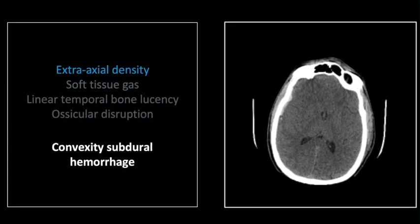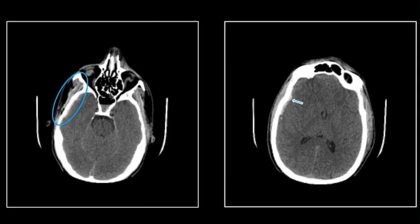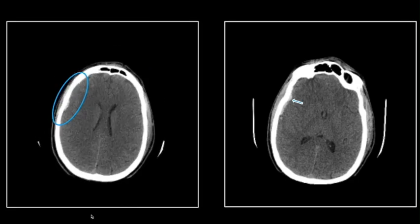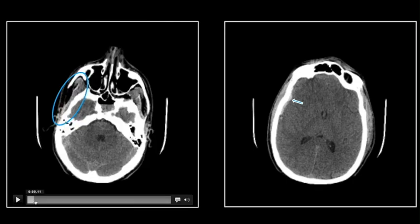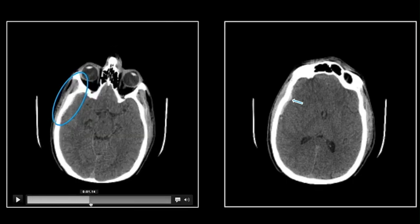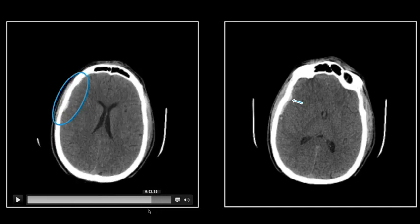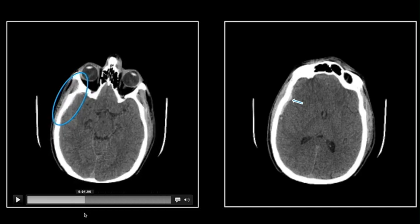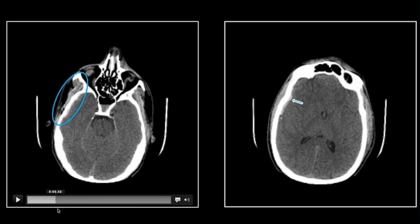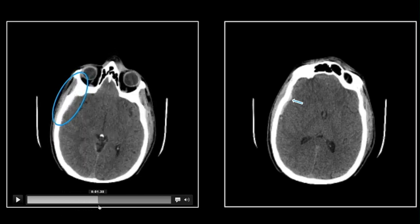Our next case is a typical convexity subdural, this one post-traumatic. You can see it here, relatively thin and somewhat irregular. It is not the most obvious thing, but certainly not of such subtlety that it would necessarily be missed. You can see the subdural, of course, crosses suture lines, this one extending over the temporal pole.